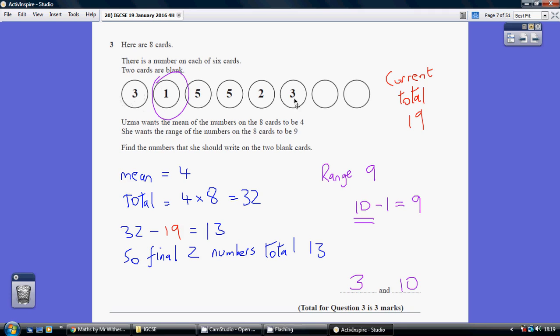Now these 6 numbers here, if you add those up, come to 19. So these remaining 2 numbers have got to add up to 32 less 19, which is 13. So we know the final 2 numbers together add up to 13. So that's our first fact.